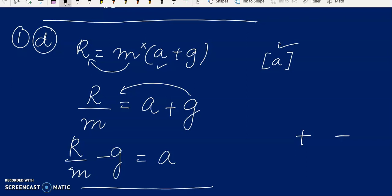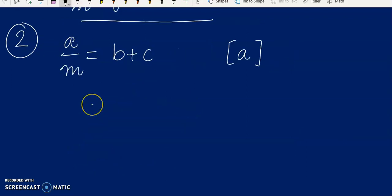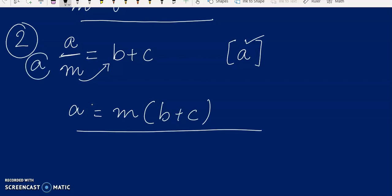Now we move on to question number two. Now students, this is a very easy peasy question. Look, we have to make A the subject of the formula, and with A there is only M which is being divided. So when it will go to the other side, it will be multiplied on the other side. A is now separated, so this is the answer to our question and this was A part.